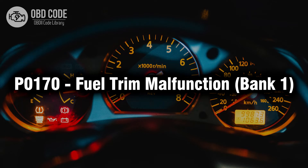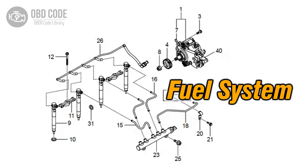Welcome. In this video we will talk about code P0170, its symptoms, causes and possible solutions. The P0170 trouble code indicates a malfunction in the fuel trim of bank 1. This code typically points to issues related to the air-fuel mixture being too rich or too lean, potentially causing operational problems or damage to the engine components.